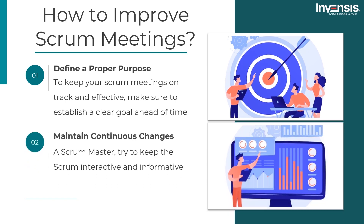Second, maintain continuous changes. If you are a Scrum master, try to keep the Scrum interactive and informative. When the Scrum meeting is the same every day, it gets monotonous and boring. So try to change something in the meeting — for example, change the order in which the updates are taken, discuss some fun facts, and so on. There is always an opportunity for improvement; even the most successful projects generally have something Scrum members wish they could change.